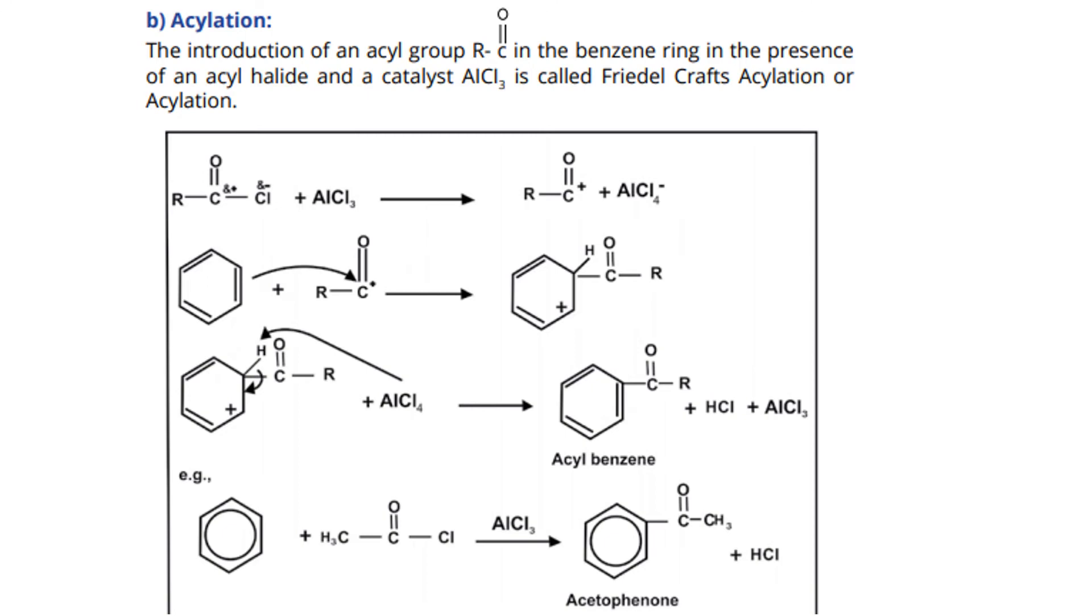Next is Friedel-Crafts acylation. Introduction of acyl group in benzene ring in presence of acyl halide and catalyst AlCl3 is called Friedel-Crafts acylation. What's the difference between alkyl and acyl? Alkyl is R-CH3, but if R with C double bond O is attached, it's called acyl group. When RC=OCl plus AlCl3 react, AlCl4 minus forms and RC=O plus forms. Benzene's double bond attacks the C, forming benzene-C=O-R. The carbon below gets positive charge because benzene has carbon at every corner.